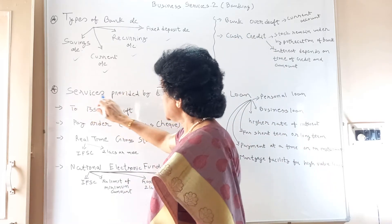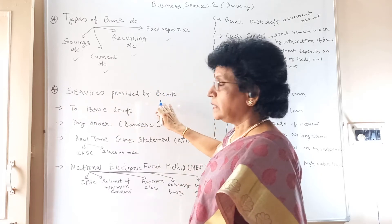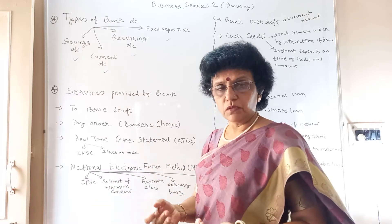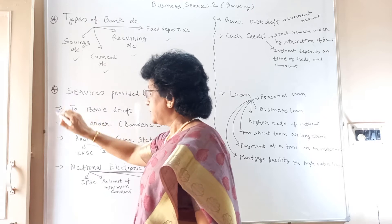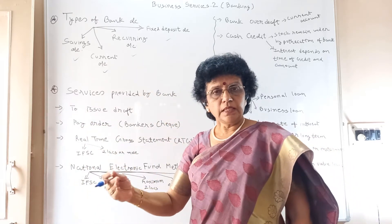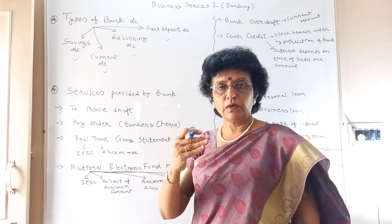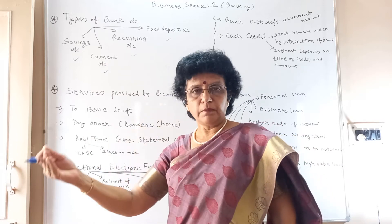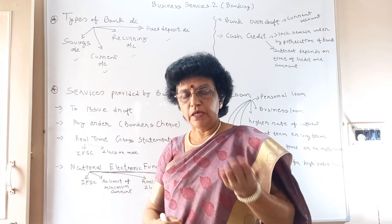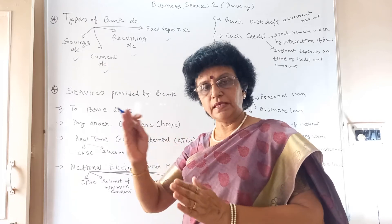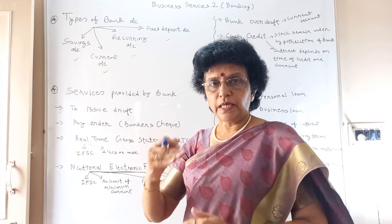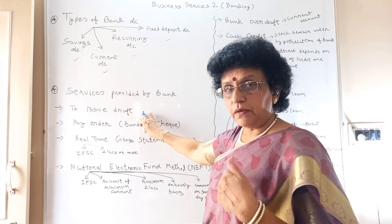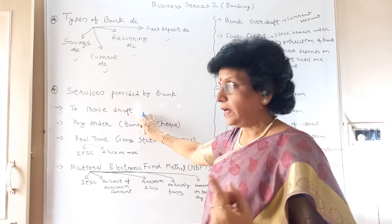Now let us see the services provided by the bank. The bank does so many things — buying and selling of money, and much more. Number one: to issue the draft. If you want to send money somewhere with full security, you visit a bank and ask them to draw a draft on a particular name. When one bank writes a draft addressing another bank to make the payment, that is called the issue of a draft. We are not writing it — the bank is writing the draft.